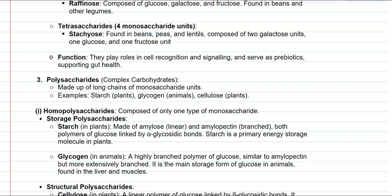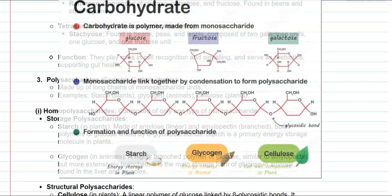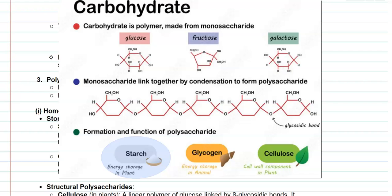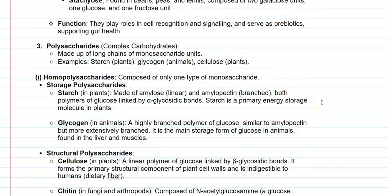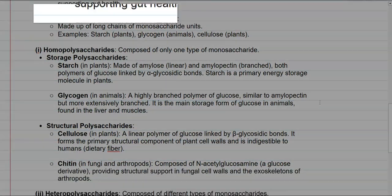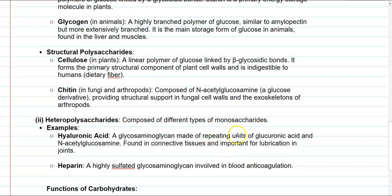The next group in the classification of carbohydrates is the polysaccharides, commonly referred to as complex carbohydrates. They possess more saccharide units and are made up of long chains of monosaccharides. Classical examples are starch, commonly present in plants; glycogen, the storage form of carbohydrate found in animals; and cellulose, present in the cell wall of the plant system. Based on the type of monosaccharides, they can be divided into homopolysaccharides and heteropolysaccharides.